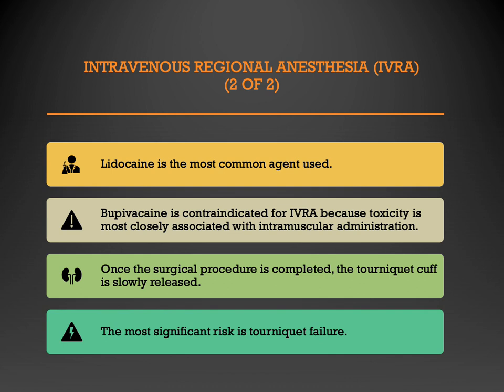Bupivacaine is contraindicated for intravenous regional anesthesia because of toxicity associated with intramuscular administration. Another contraindication is traumatic laceration, as this could allow uncontrolled release of the agent from the limb. Once the procedure is over, the tourniquet is deflated slowly so that the regional anesthetic does not hit the vascular system all at once. The most significant risk with intravenous regional anesthesia is tourniquet failure, which could cause a toxic volume of anesthetic to rapidly enter the systemic circulation.